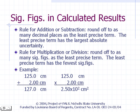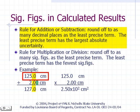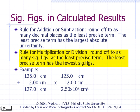For most calculations, we follow simpler rules for rounding off answers. These rules are generally — though not always — consistent with results obtained by propagating errors. For addition, round off to as many decimal places as the least precise term — the one with the largest absolute uncertainty. In the example shown, the uncertainty in 125 is at least ±0.1 and in 2.00 is at least ±0.01; so 125 is the least precise term and the sum is rounded to the nearest tenth.